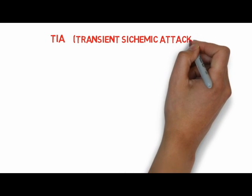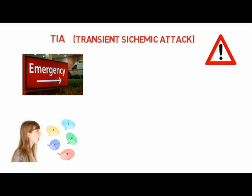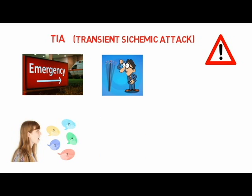Common temporary symptoms of TIA include difficulty speaking or understanding others, loss or blurring of vision in one eye, and loss of strength or numbness in an arm or leg.